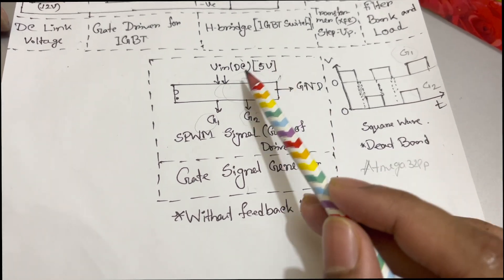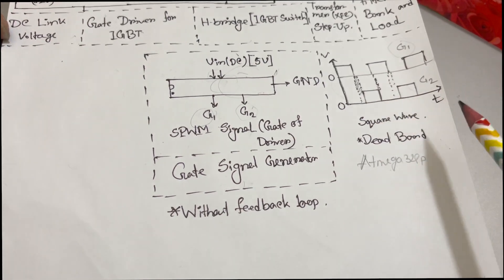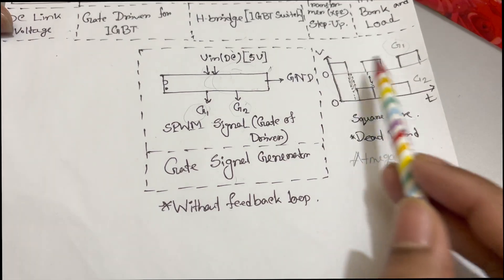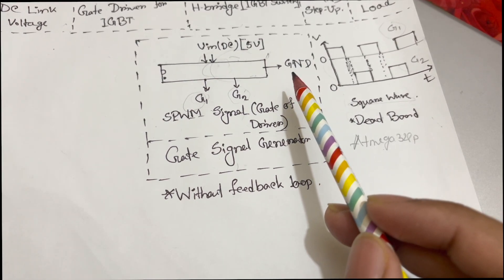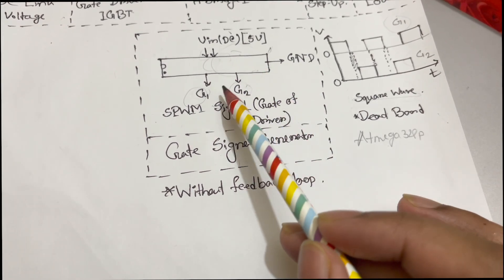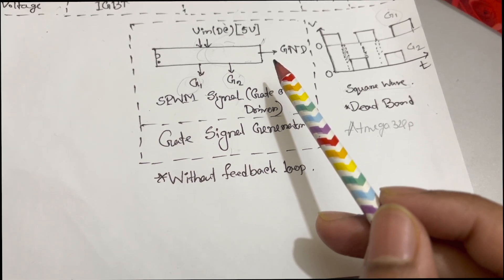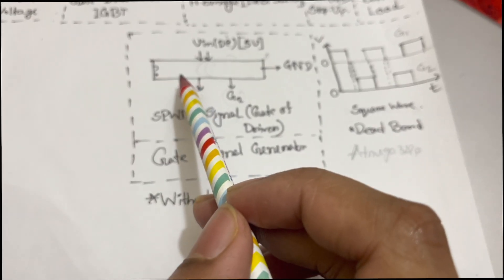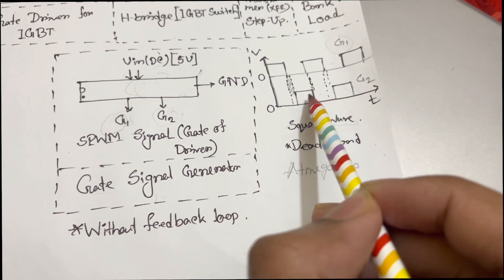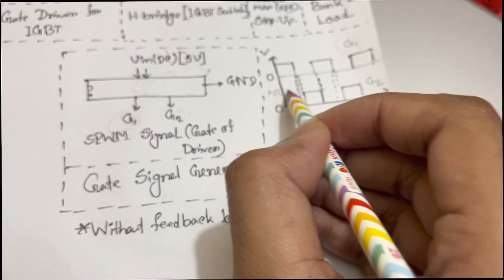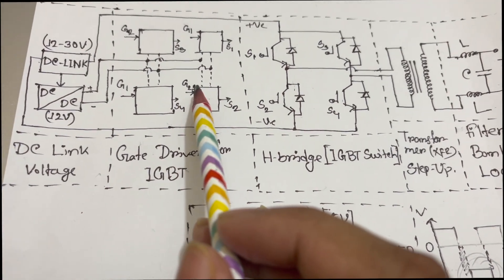The main chip needs plus 5-volt DC logic level voltage, and it outputs the G1 and G2 gate pulses. Here I have shown square wave gate pulses, but in my hardware demonstration I have used SPWM - Sinusoidal Pulse Width Modulation - to generate the gate signals from the ATmega328P. You can use any types of microcontroller like STM32-based or PIC-based microcontrollers. These are the main gate signal generators, generating G1 and G2 as plus 5-volt logic level signals.